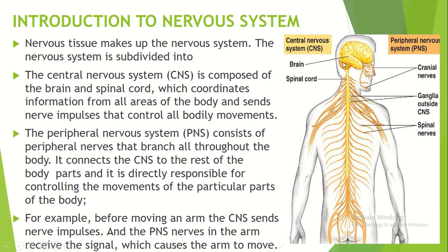We have signals from the brain and the spinal cord. The Peripheral Nervous System transmits those signals as a proper signal to the rest of the body. For example, before moving an arm, the Central Nervous System sends nerve impulses, and the Peripheral Nervous System receives the signal, which causes the arm to move.